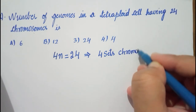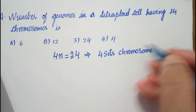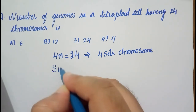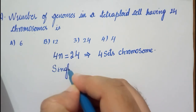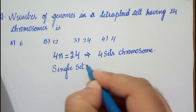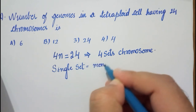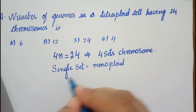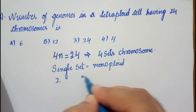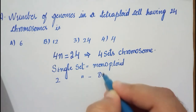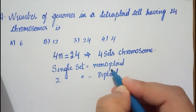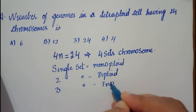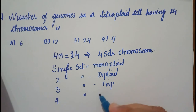Understand this concept: if there is a single set of chromosomes, you call it monoploid. Two sets of chromosomes is diploid. Three sets of chromosomes is triploid, and four sets of chromosomes is tetraploid.